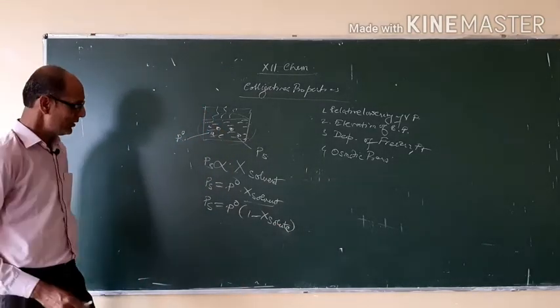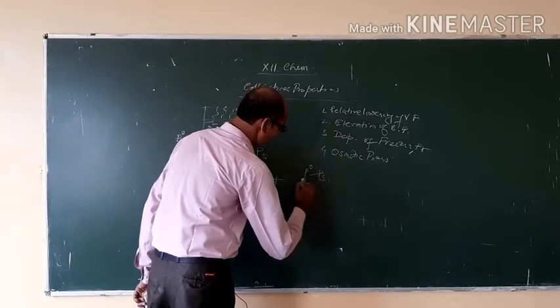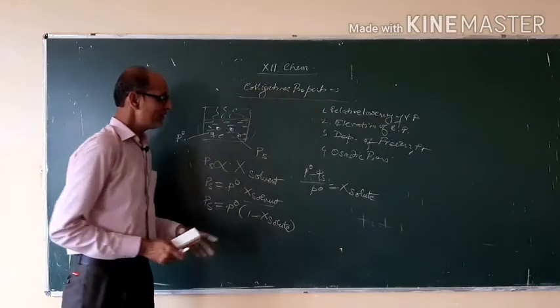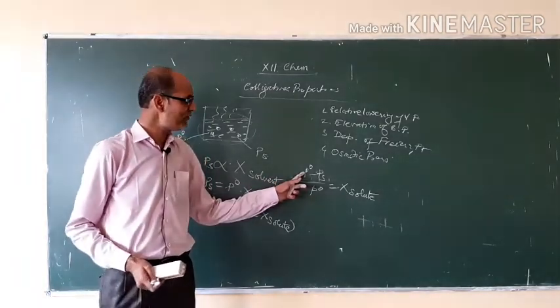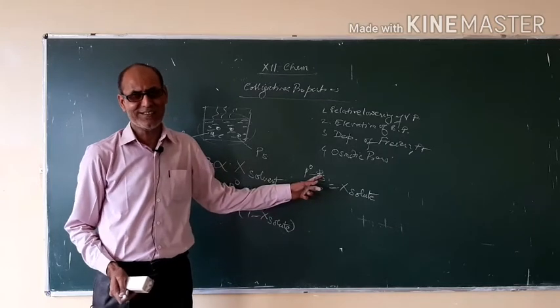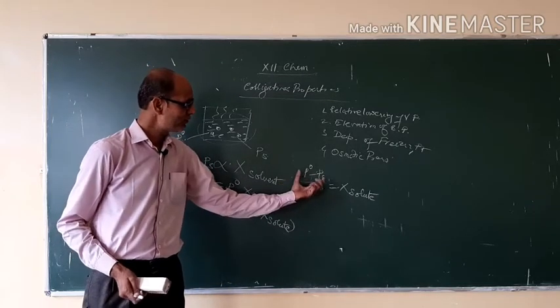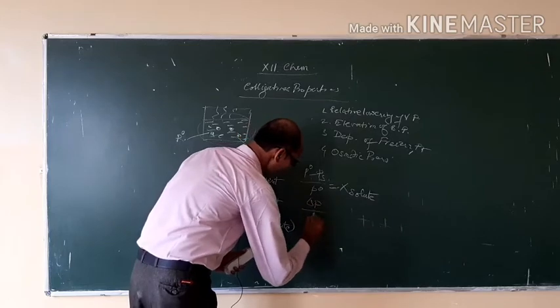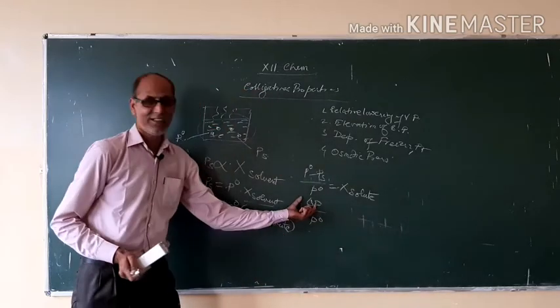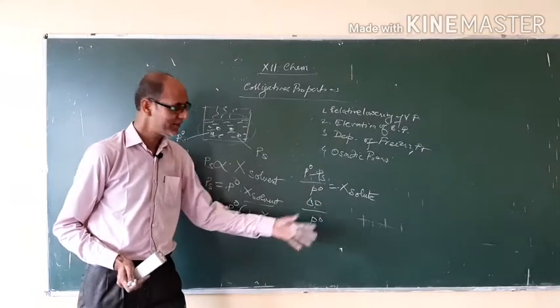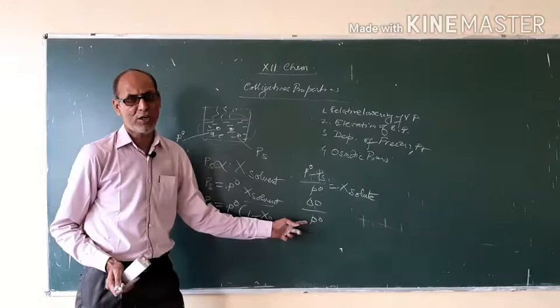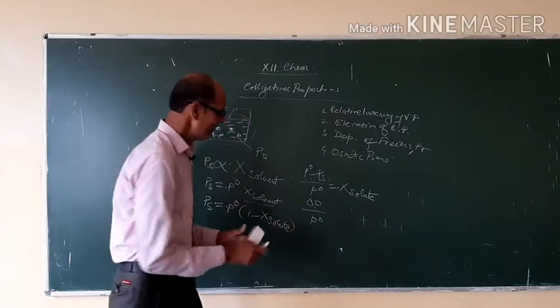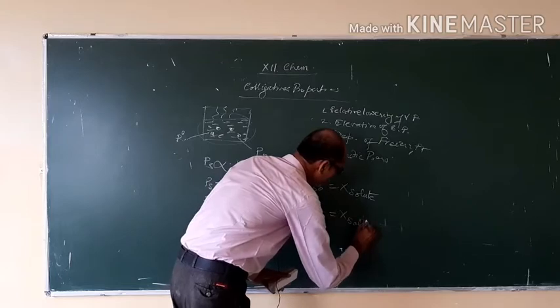On solving this, you will get (P0 minus PS) upon P0 equals X solute. P0 is the vapor pressure of pure solvent. PS is the vapor pressure of the solution. PS is little less than P0. We can say in this place del P upon P0, or you can say lowering of vapor pressure is del P. When we divide this del P by P0, this whole portion is called relative lowering of vapor pressure that will be equal to mole fraction of solute.